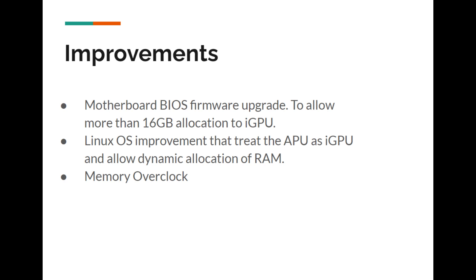To make it run faster, you can do some memory overclocking. By increasing the speed of your RAM, you can significantly boost the performance of your iGPU. But remember, always follow safe overclocking practices — we don't want any fried components.